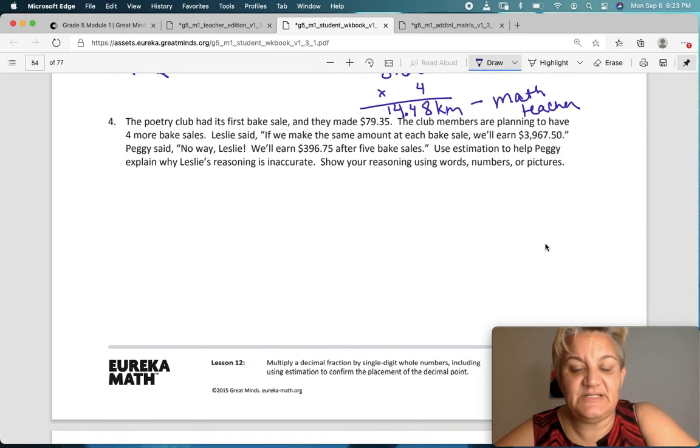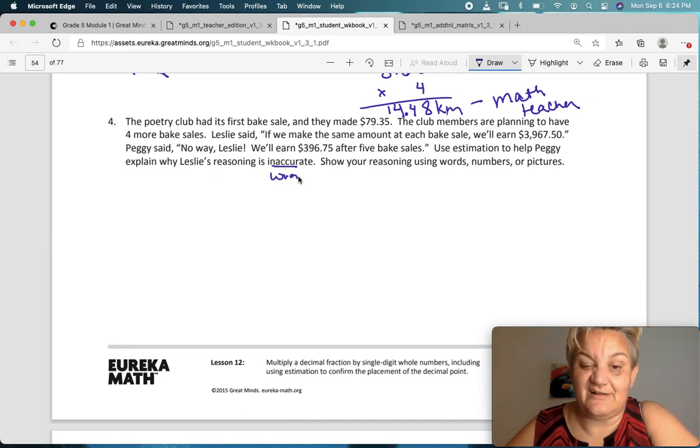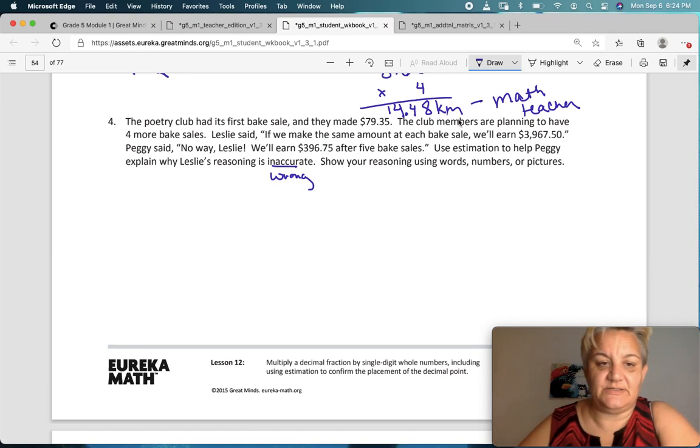The Poetry Club had its first bake sale and they made $79.35. The club members are planning to have four more bake sales. Leslie said, if we can make the same amount at each bake sale, we'll earn $3,967.50. Peggy said, no way. No way, Leslie. We'll earn $396.75 after five bake sales. Use estimation to help Peggy explain why Leslie's reasoning is inaccurate. Inaccurate means wrong. Leslie is wrong. Show your reasoning using words, numbers, or pictures.